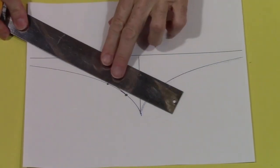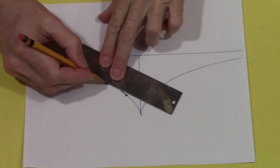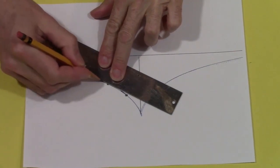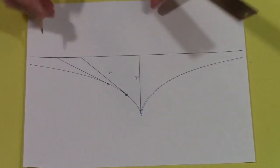Then because it's a tractrix, the distance from any point of the curve to the asymptote, measuring along the tangent line at that point, is constant.